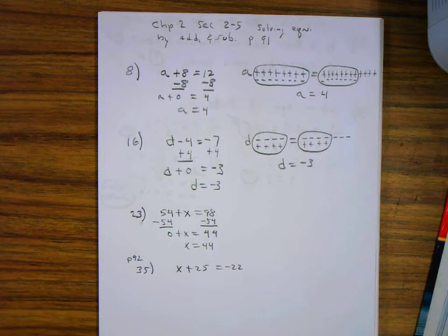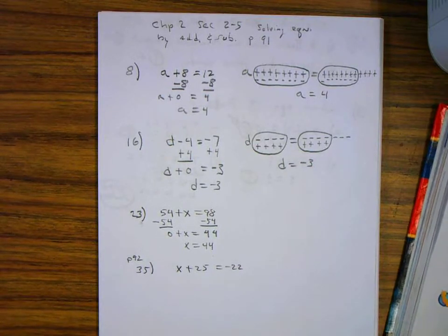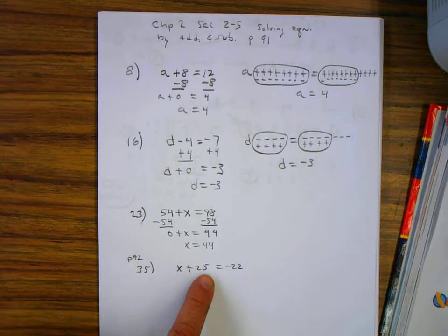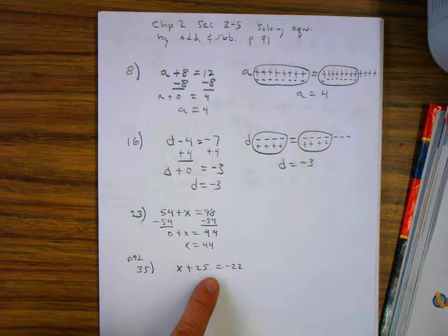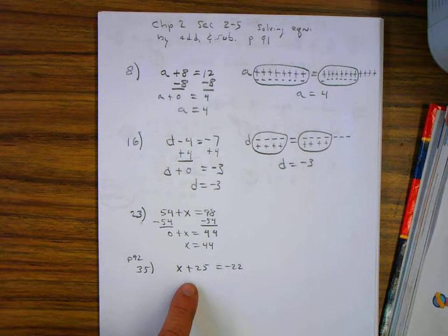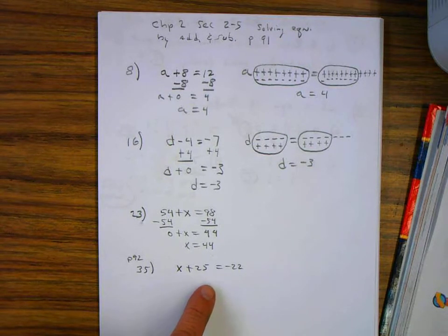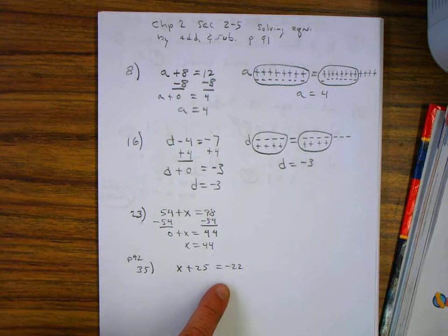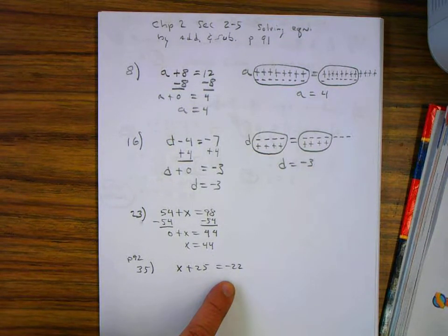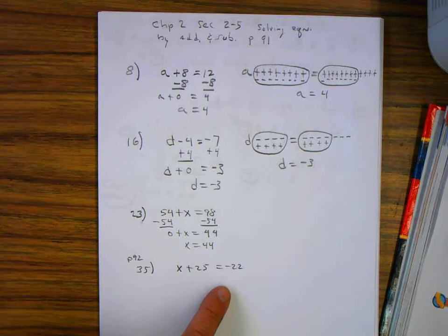The problem says to solve x plus 25 equals minus 22, one student subtracted 25 from each side. Another student added minus 25 to each side. Will both methods work?